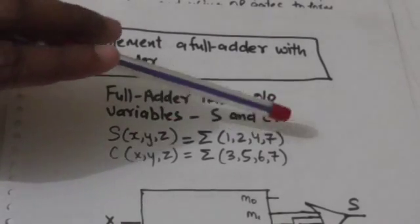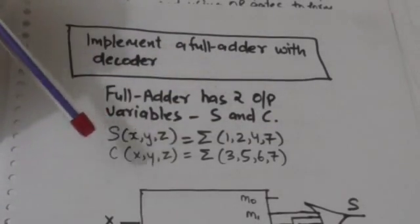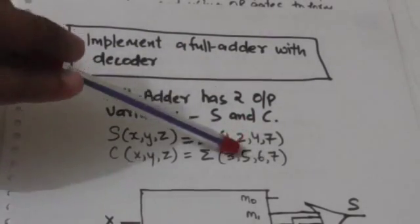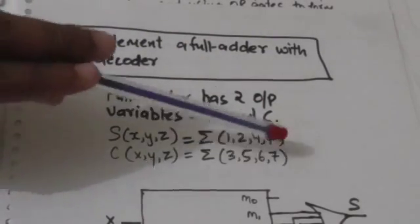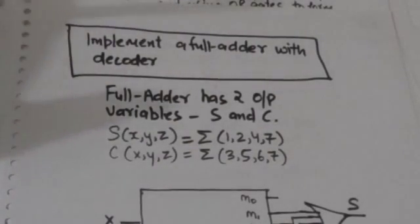S is the sum of minterms m1, m2, m4, and m7. C is the sum of minterms m3, m5, m6, and m7.